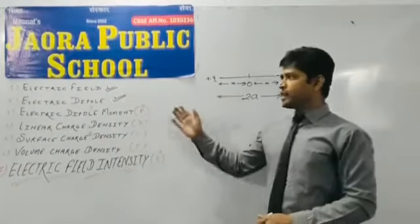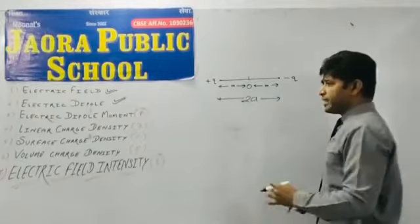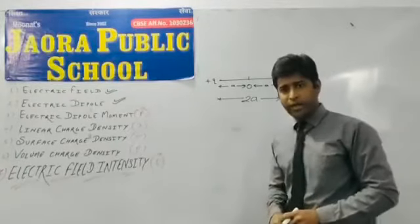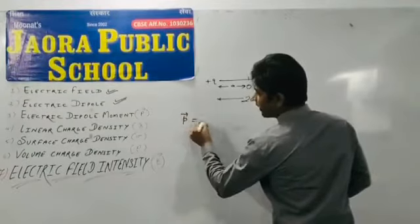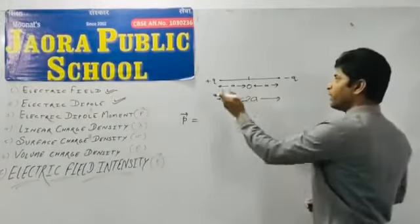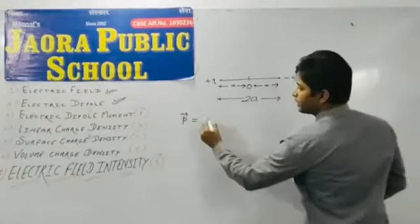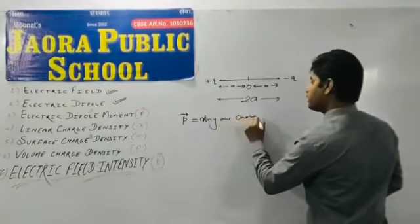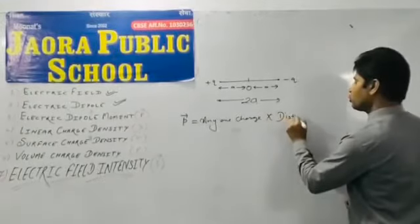Now, next definition, electric dipole moment. It is very easy. Actually, it is a definition. This is a mathematical form of electric dipole moment. Exactly, electric dipole moment is the product of any one charge of the system of electric dipole and the distance between two charges.